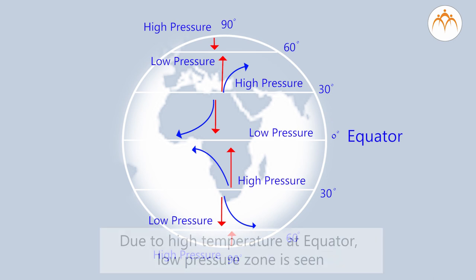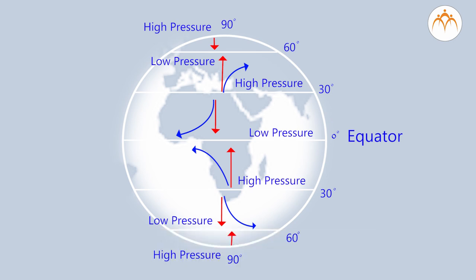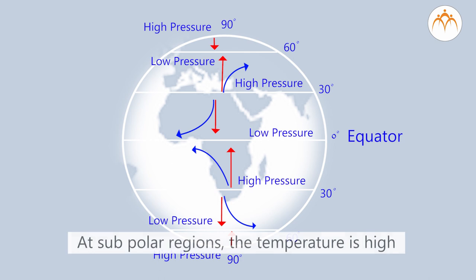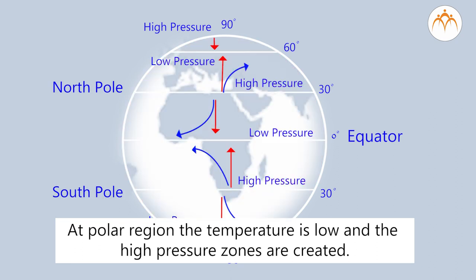Due to high temperature at the equator, a low pressure zone is seen. At subpolar regions the temperature is high. At polar regions the temperature is low and high pressure zones are created.